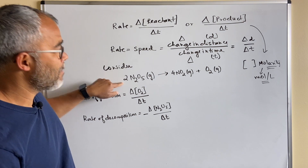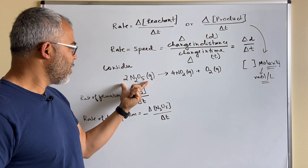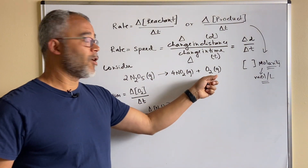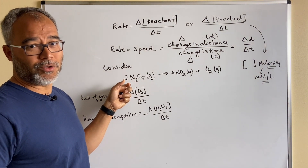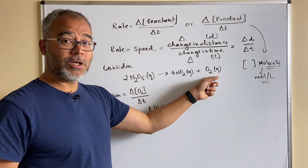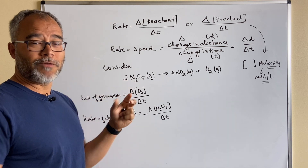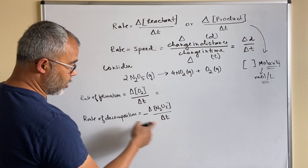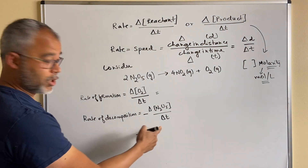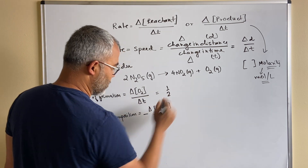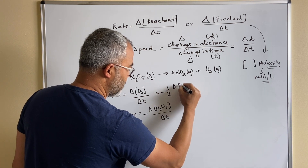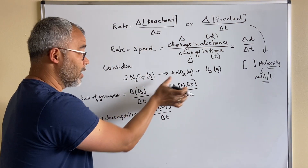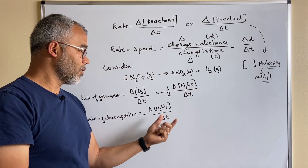Looking at the balanced reaction, for every two molecules of N₂O₅ that decompose, one molecule of oxygen is formed. So the rate of formation of oxygen is half the rate of decomposition of N₂O₅. The rate of formation of oxygen equals one-half of (−ΔN₂O₅/Δt). That's how they relate — the rate of formation of oxygen is half the rate of decomposition of N₂O₅.